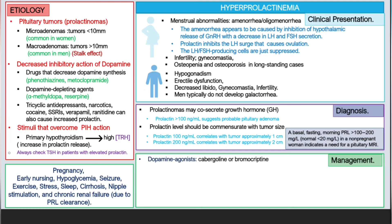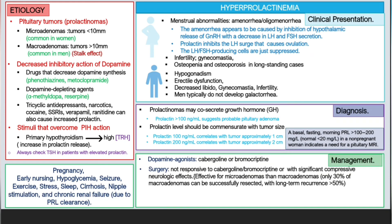For treatment, we use a dopamine agonist such as cabergoline or bromocriptine. If a patient presents with galactorrhea, the number one drug is cabergoline. Surgery is indicated if the tumor is not responsive to cabergoline or bromocriptine, or if there are significant compressive neurological deficits. Surgery is more effective for microadenomas than macroadenomas — only 30% of macroadenomas can be successfully resected, with a long-term recurrence rate of more than 50%.